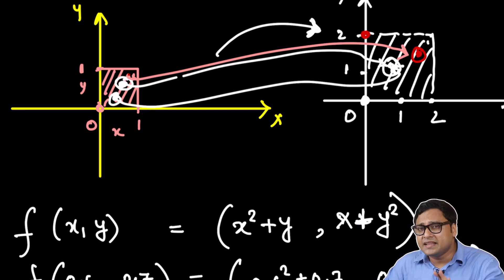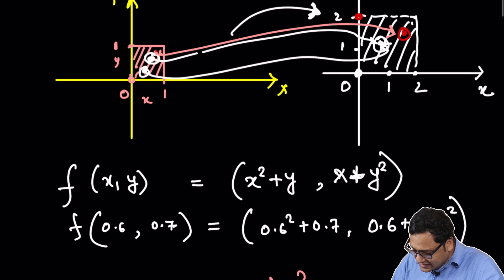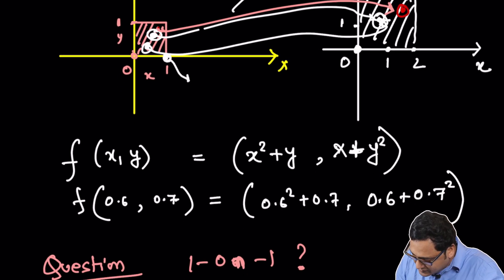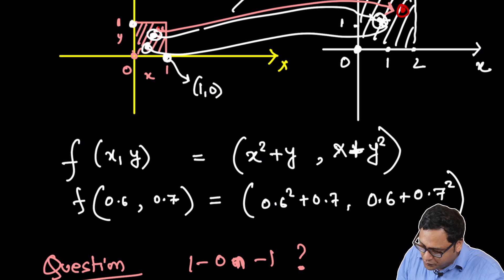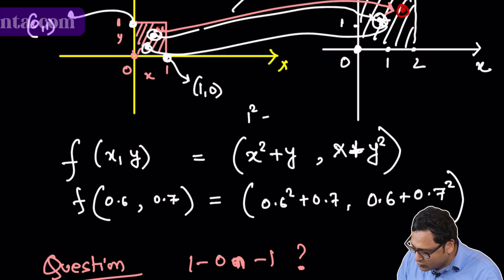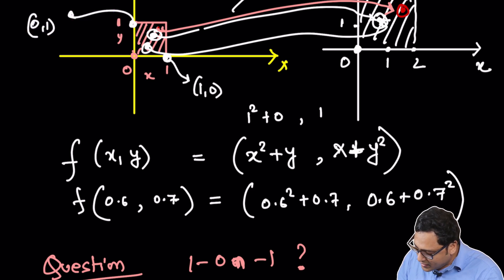And we can solve this problem really easily because we can find counter examples for both cases. Let's take the input point 1 comma 0. And let's take the input point 0 comma 1. In both cases, 1 comma 0 maps to 1 squared plus 0 comma 1 plus 0 squared, which is 1 comma 1.